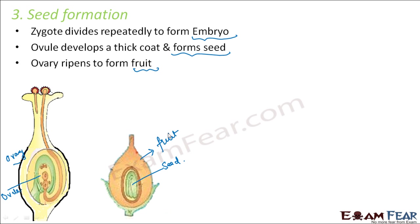Inside the fruit is the seed. Take mango as an example: inside the mango you find a seed. The mango is the fruit, which is basically the ripened ovary, and the hard seed structure inside is nothing but the ovule. This is what happens after fertilization has taken place.